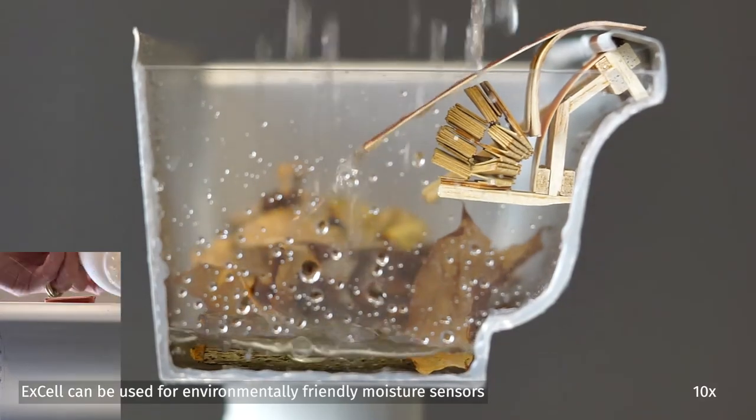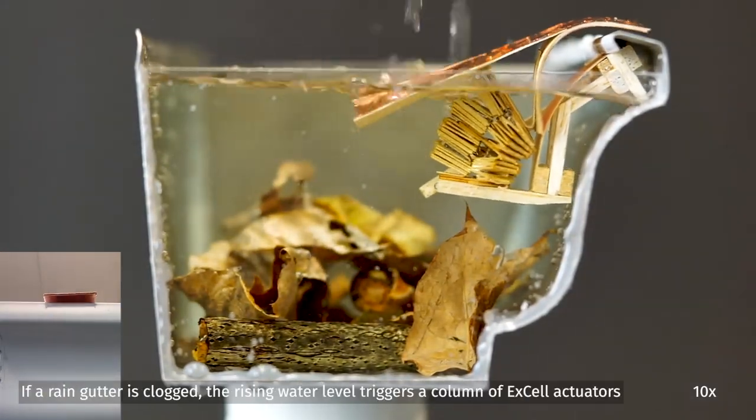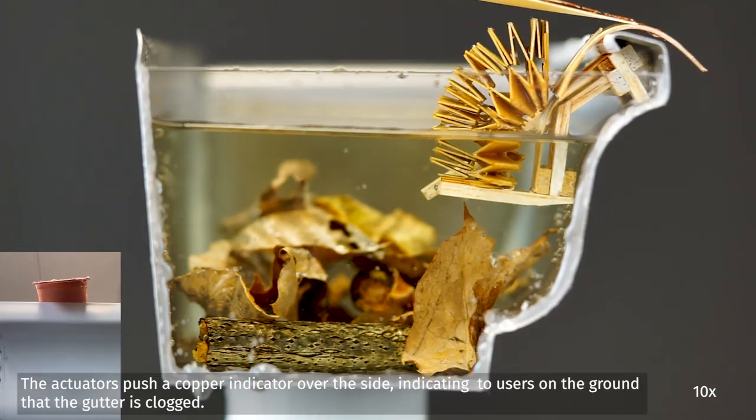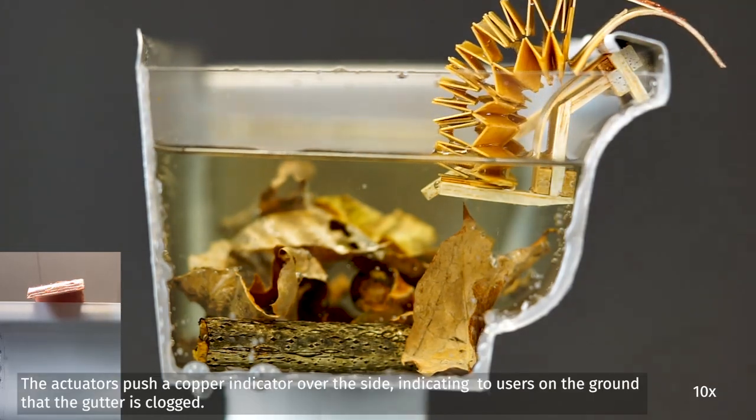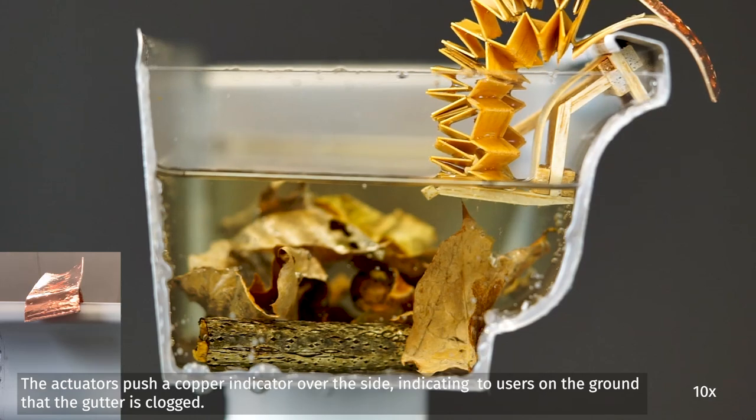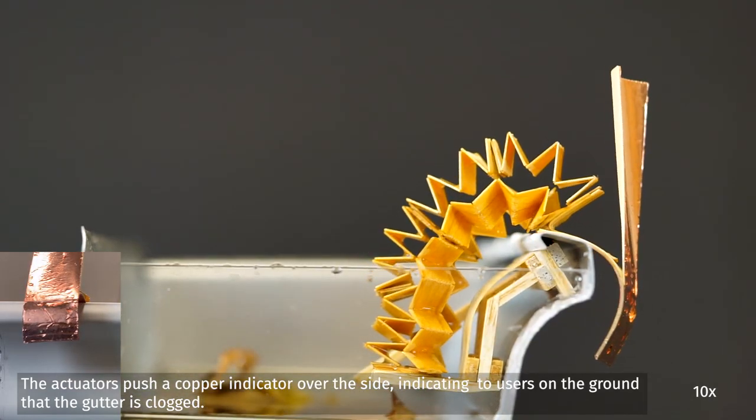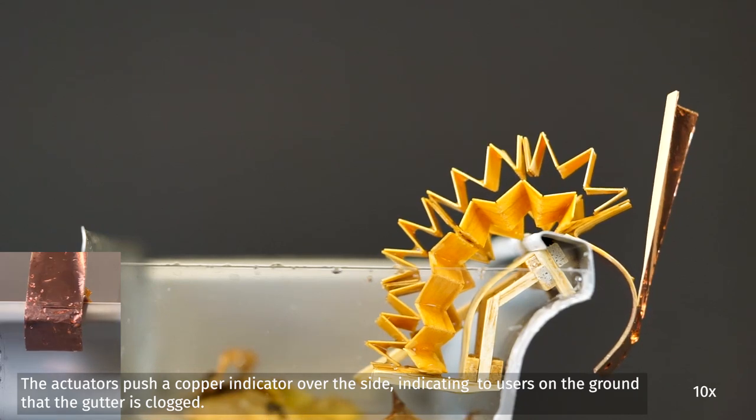XL actuators could be used to signal the presence of water. Here, a column of actuators sits inside a rain gutter. It is shielded from falling rain, but if the gutter becomes clogged and the water level rises, the actuators push a copper flag over the side of the gutter, making it easy to see from the ground that the gutter needs cleaning.